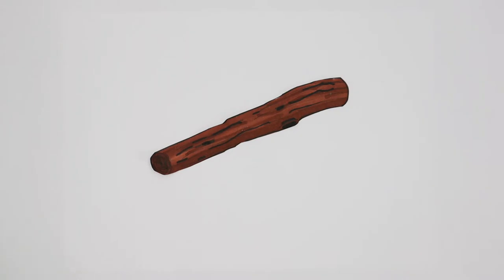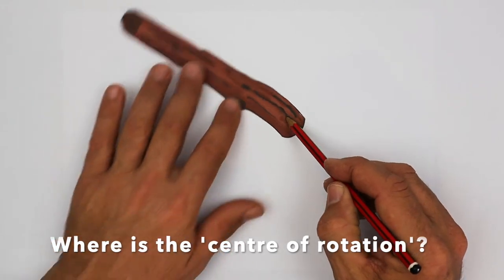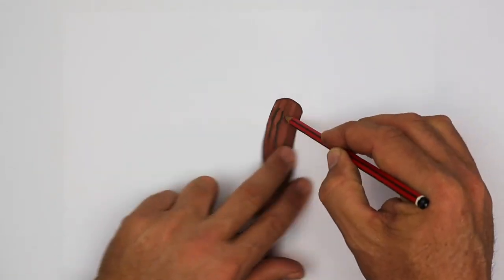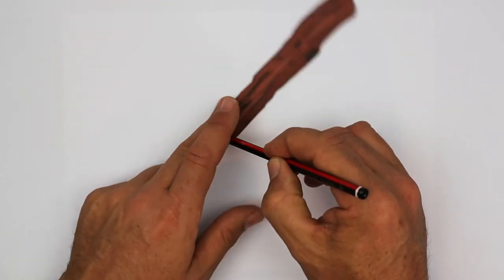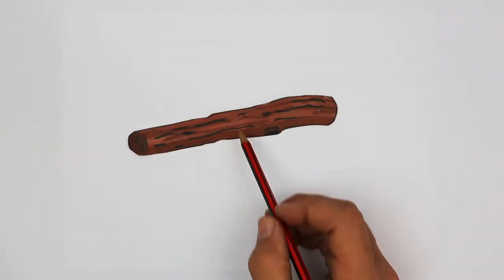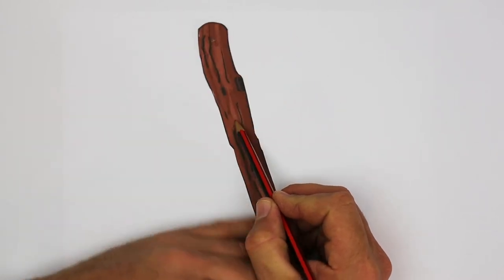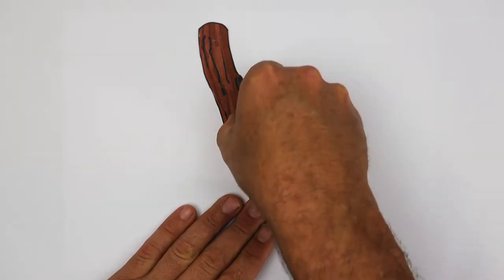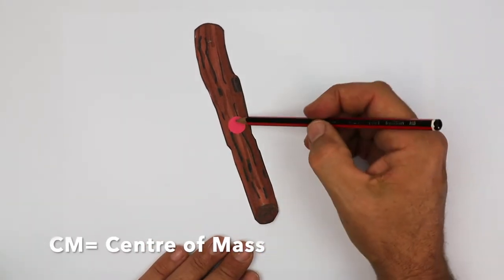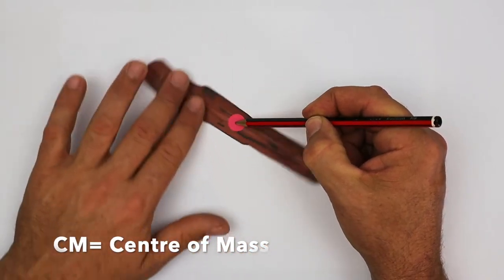Imagine this stick has been tossed through the air and it's spinning around. Exactly where does it spin? Does it pivot at one end? Or the other? Or the middle? If you said it spins about the middle, you're right. That's because it's the centre of the stick's mass. That's where it would balance. So we'll represent that using this pink dot. Imagine the centre of mass like a pin that an object would spin around.